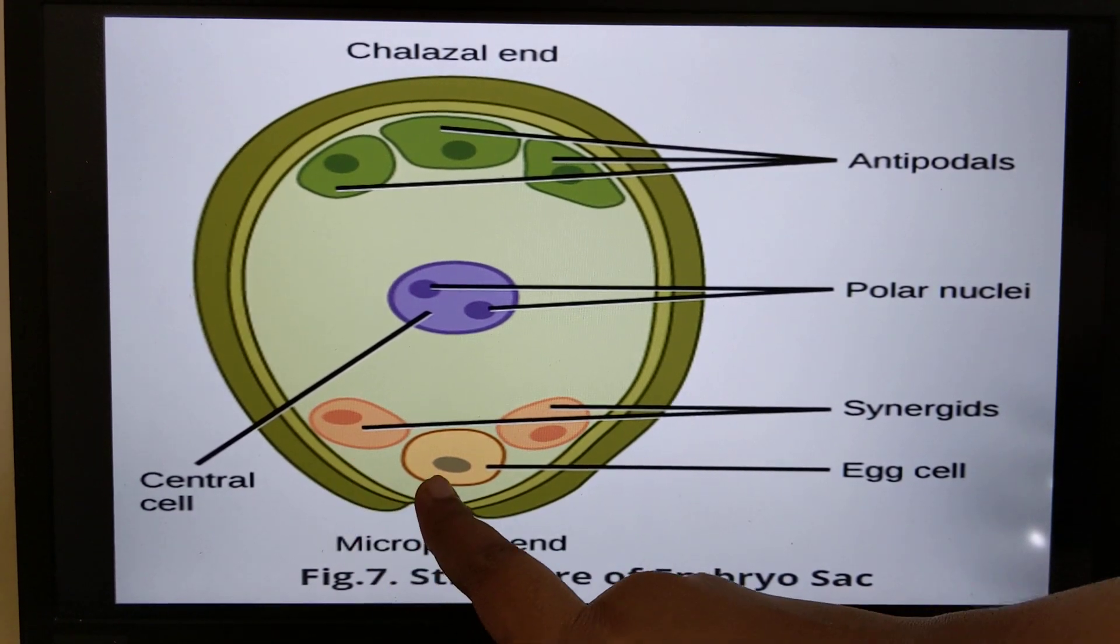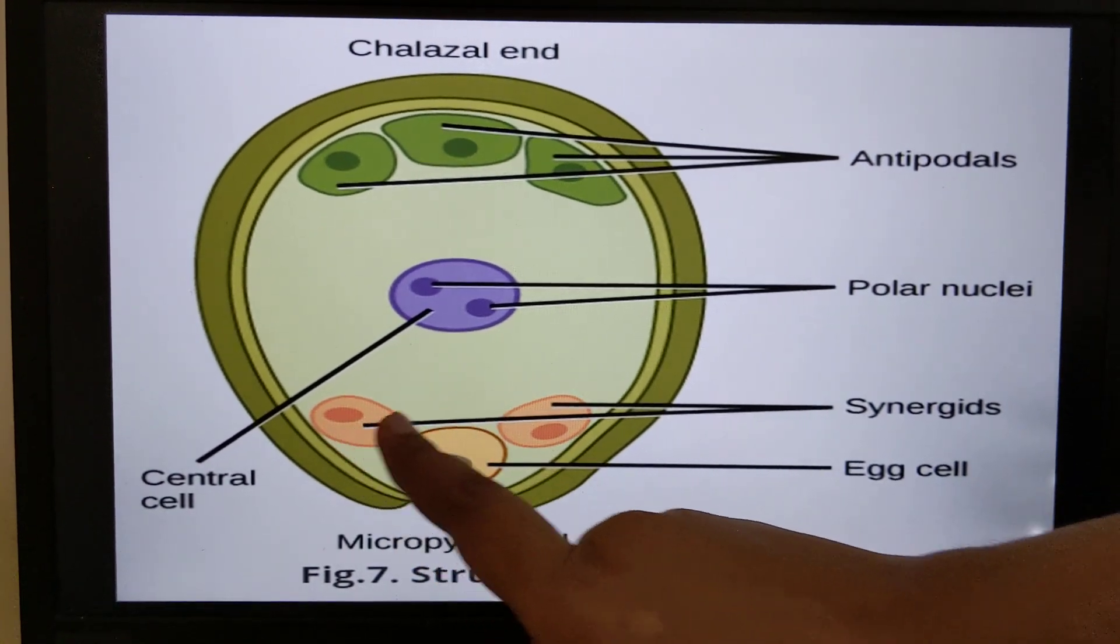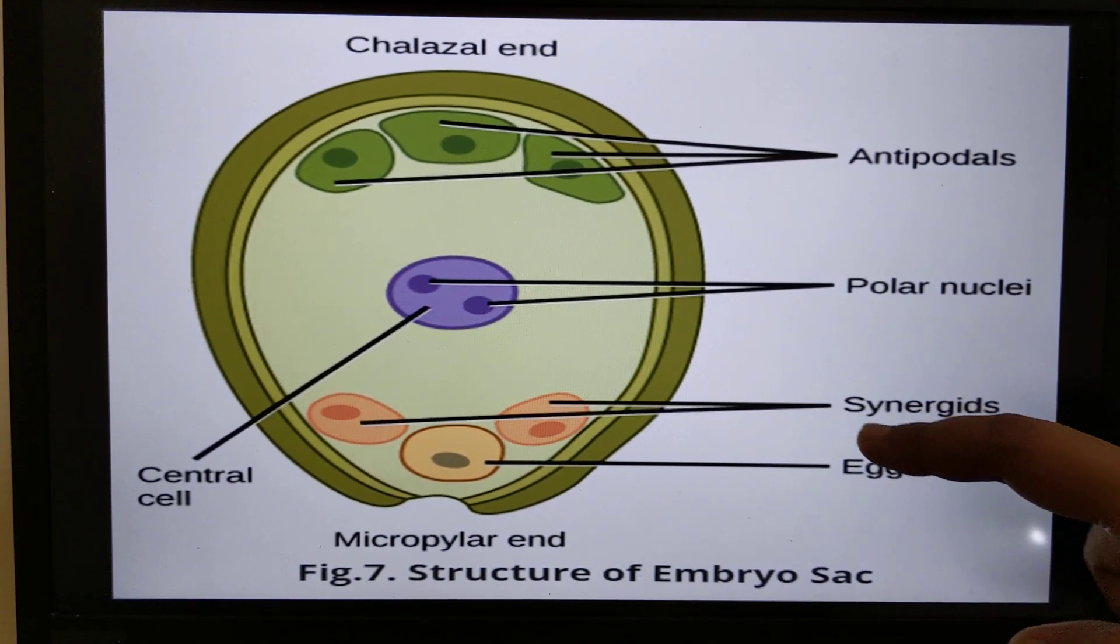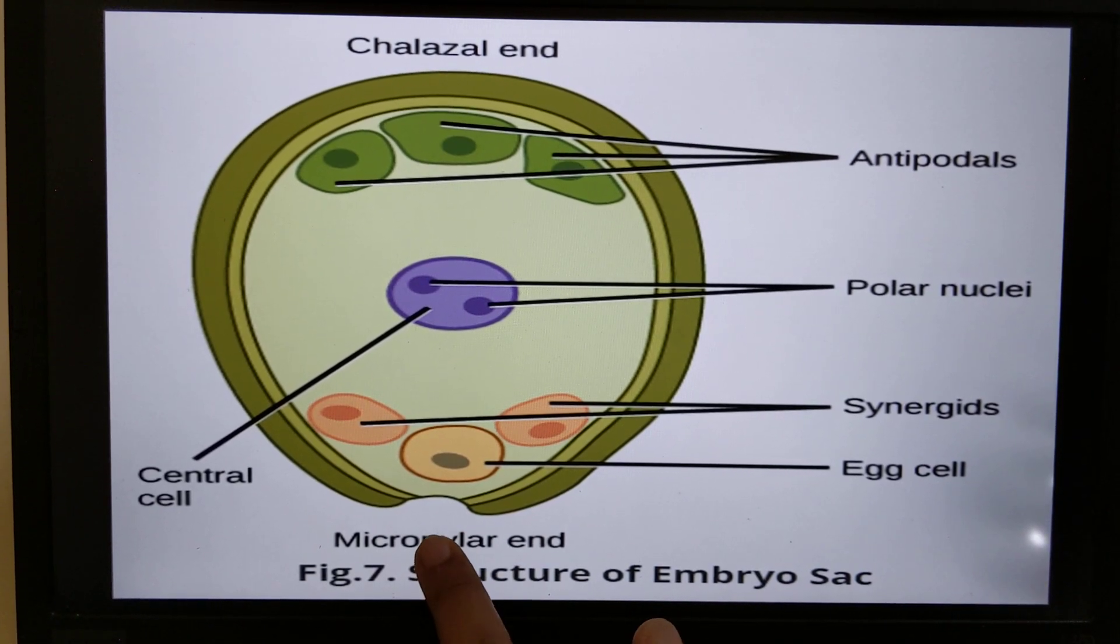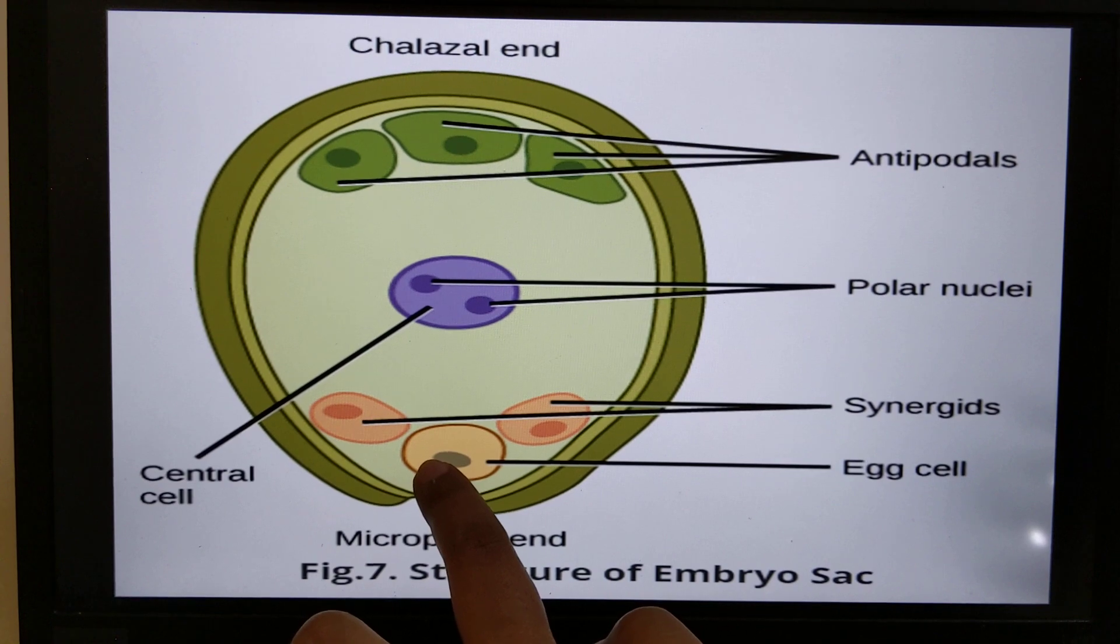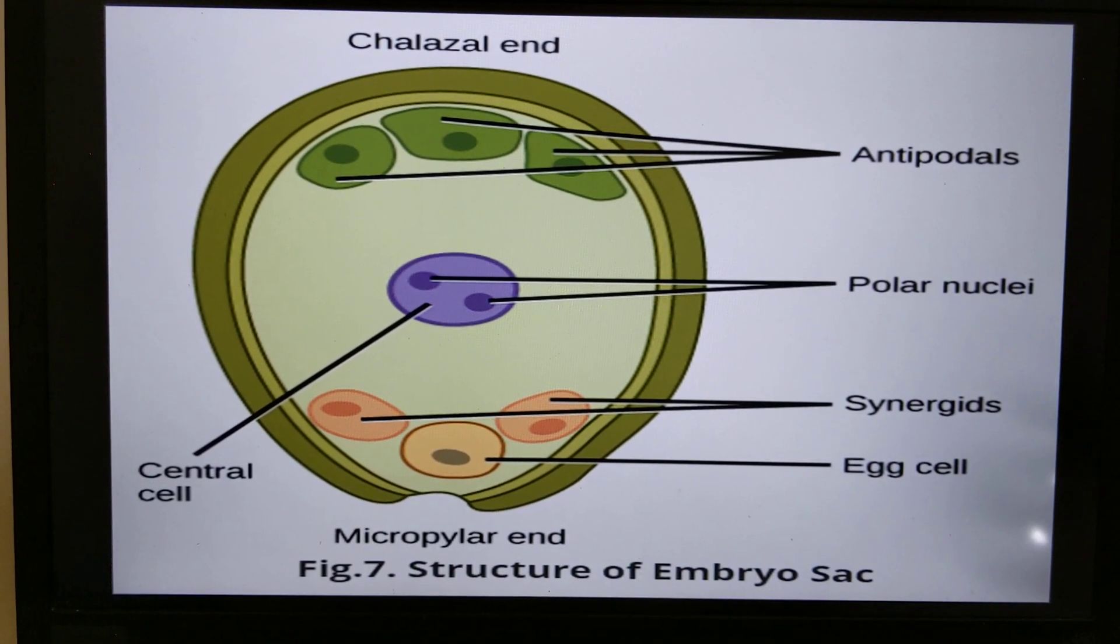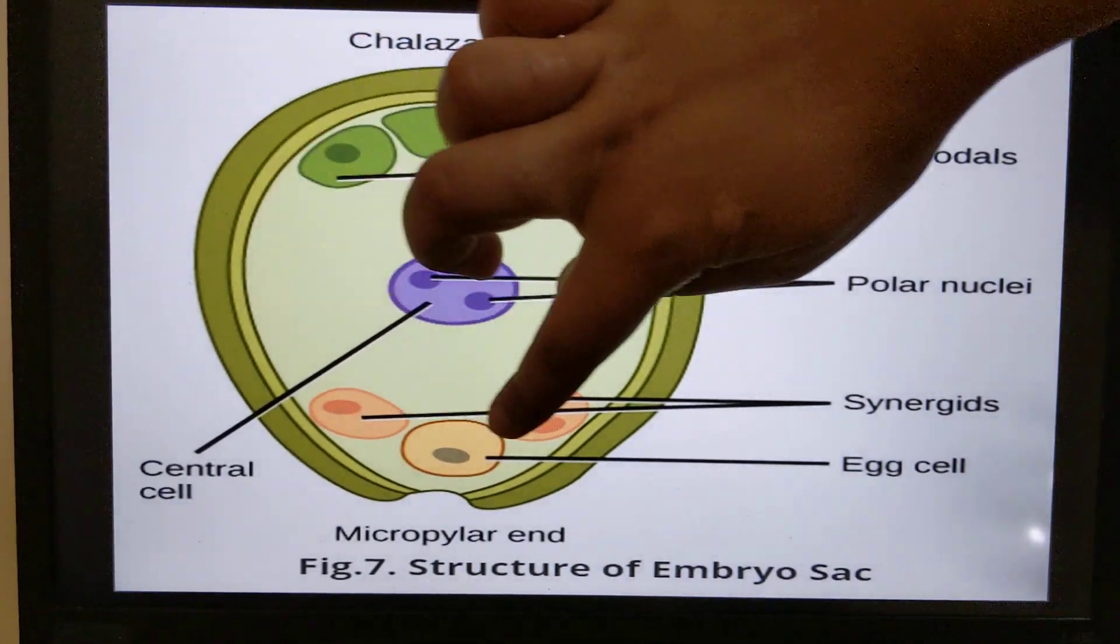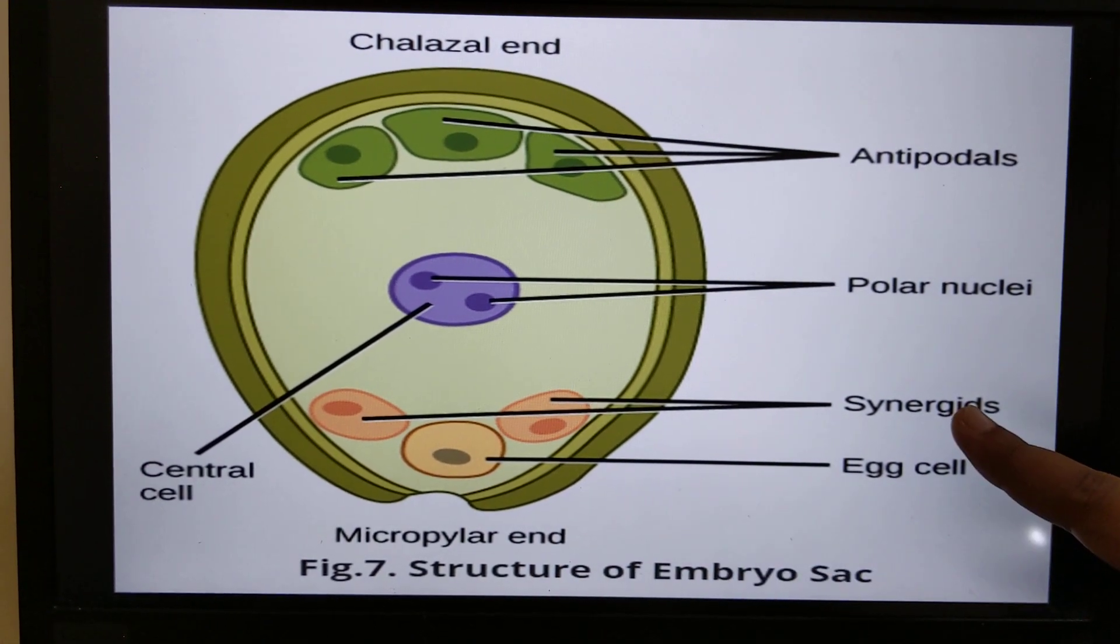Here downwards you can see there are 3 cells. Out of these 3, the 2 red colored ones are the synergids. The synergids help when the pollen tube enters from the male gametophyte. When it enters, the synergids help to burst the pollen tube by providing water. These are present towards the micropylar end.